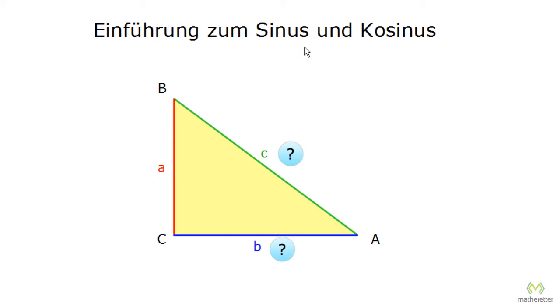Once we have a side and the angle opposite it — in this case A — we can calculate the rest of the right triangle. We will take a closer look at that, but first we have to clarify a few terms.